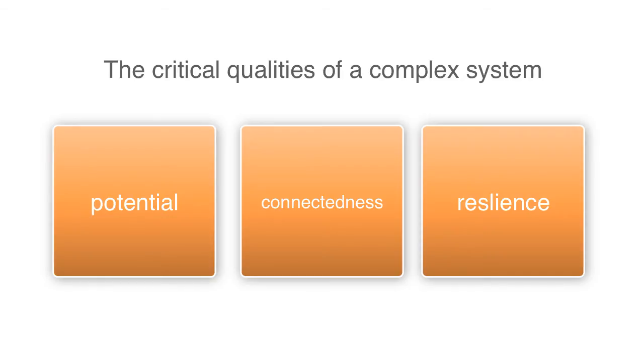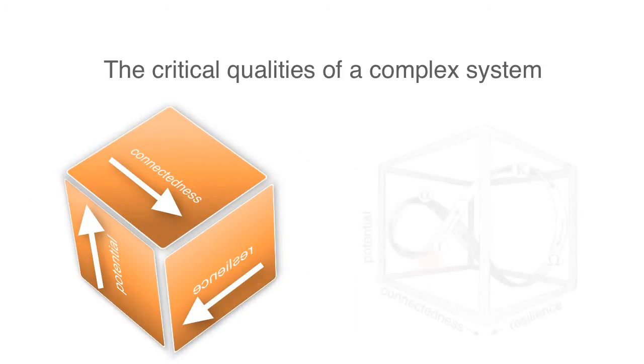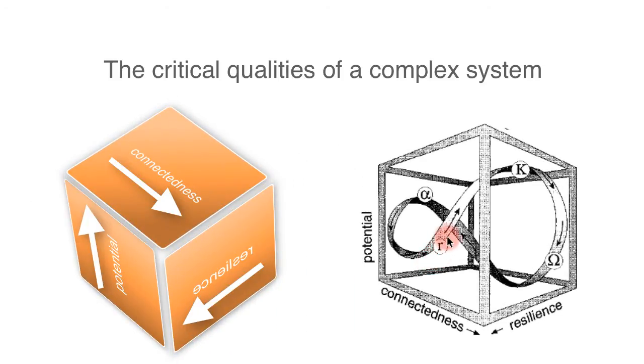Holling proposes that these three attributes are interrelated. Well, how do these look when they're all put together? Notice that as a system grows, the interconnectedness also increases, as does the potential or wealth of the system.